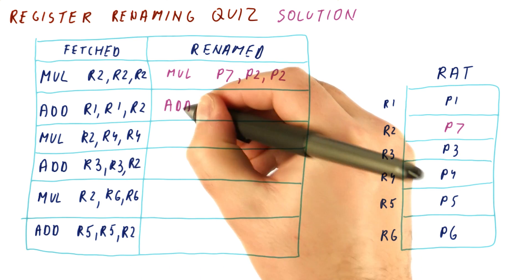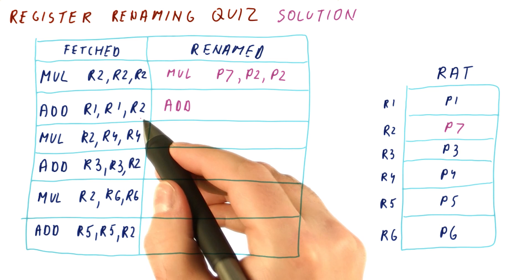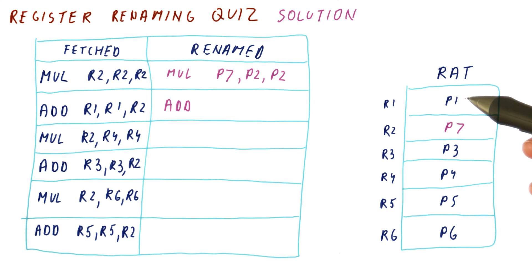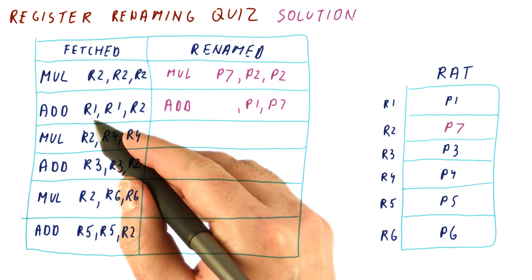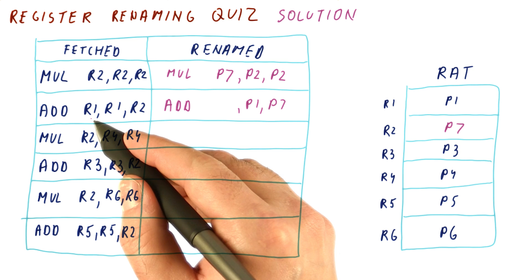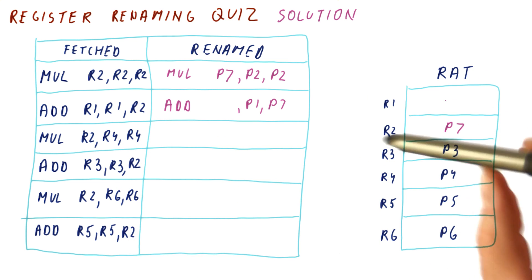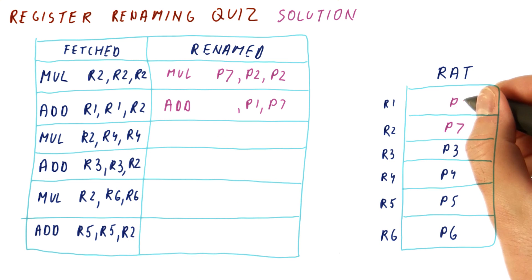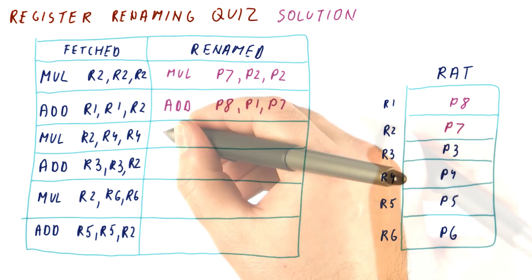It's going to be an ADD. R1 and R2 are going to be P1 and P7. R1 is where we put the result. Remember, you don't use this — you rename it to the next physical register. So we have P8.